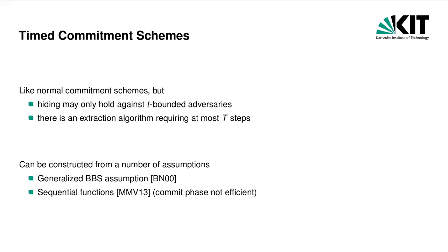In our setting, we will not be able to use this strategy as it requires commitment schemes that are straight-line extractable by the simulator but remain hiding otherwise. As our simulator is polynomially bounded, such commitment schemes cannot be constructed without a setup. Instead, we will try the next best thing: timed commitment schemes. Very informally, a timed commitment scheme is like a normal commitment scheme, but the hiding property is only guaranteed against adversaries whose runtime is bounded by some value t. This alone is not useful because t may be very large. We thus require an extraction algorithm with runtime at most capital T. If capital T is polynomial, such commitments can be extracted in polynomial time by our simulator. Timed commitments can be constructed from a number of assumptions, such as the generalized RSA assumption, as demonstrated by Boneh and Naor. Constructions from weaker assumptions such as sequential functions are also possible, though the resulting protocols do not have an efficient commit phase.